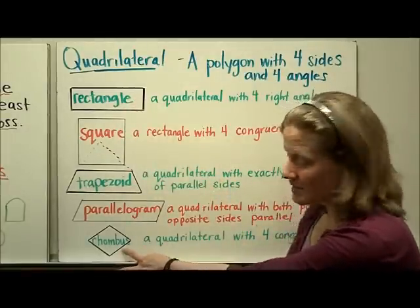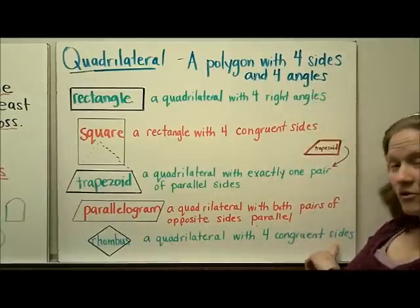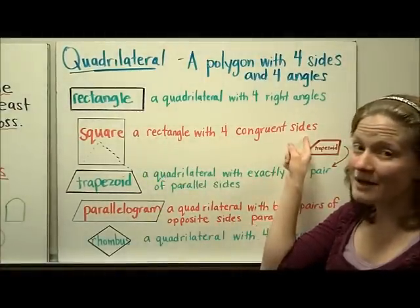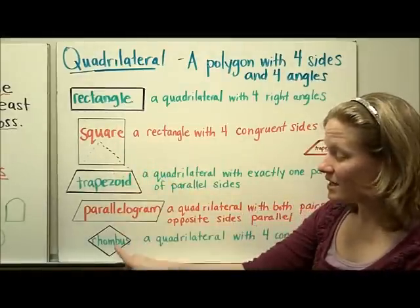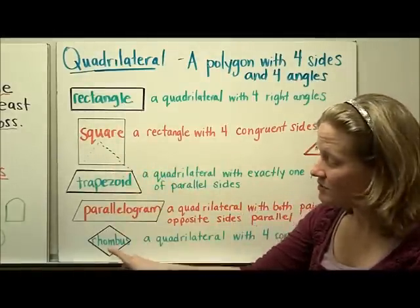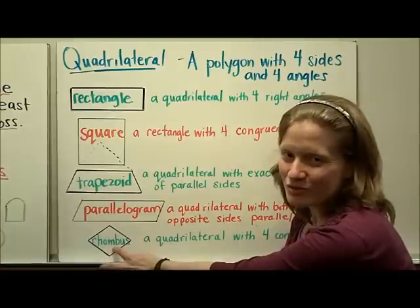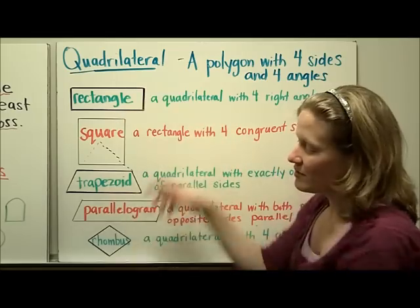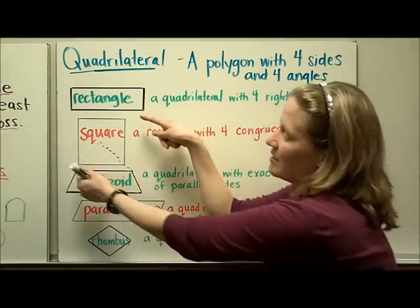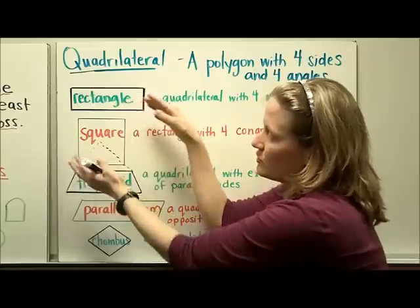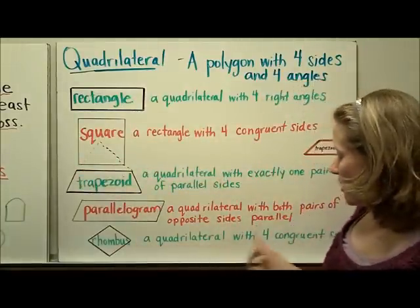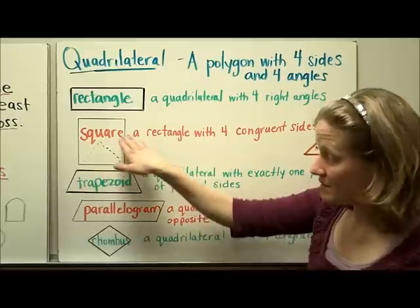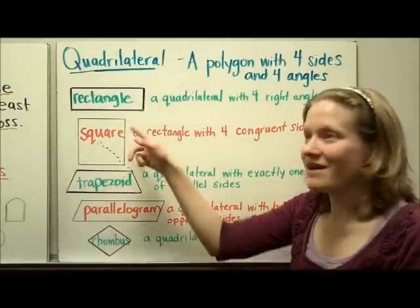Finally, a rhombus is a quadrilateral with four congruent sides. It's similar to a square because it has four congruent sides, but a square must have four right angles whereas a rhombus does not. People often call a rhombus a 'squished square' — it's like you take the sides of a square and smush them so it flattens out. A rhombus has four congruent sides but not necessarily four right angles. A square is a rhombus, but a rhombus does not have to be a square.